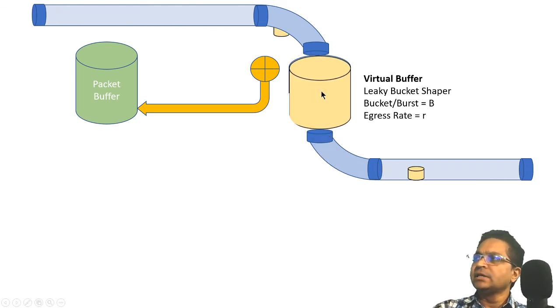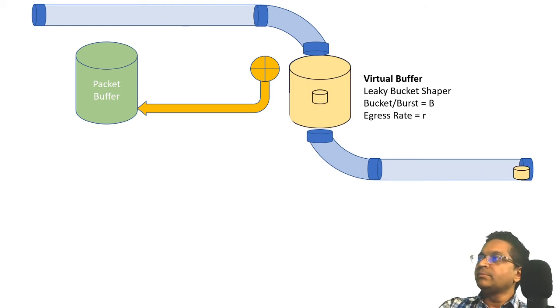That's it, guys. This is the main leaky bucket algorithm. In summary, please remember that there is an egress rate R and a size of the bucket B. This is different from the main packet buffer. You emulate this main packet buffer in this leaky bucket shaper.